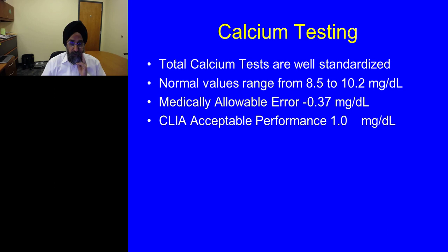Calcium is critical for diagnosing these patients. In our laboratories, calcium tests by all manufacturers are very well standardized — normal values consistently range from 8.5 to 10.2 mg/dL across all hospitals. Clinically, doctors will take action if the value drops by more than 0.37–0.4 mg/dL. The CLIA acceptable performance, which is the CAP standard, allows within plus or minus 1 mg/dL to pass quality among various labs.